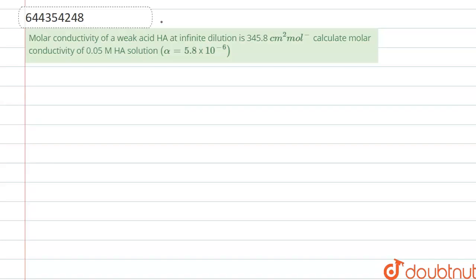Hello everyone, here the question is: molar conductivity of a weak acid HA at infinite dilution is 345.8 cm square per mole. Calculate the molar conductivity of 0.05 M HA solution.